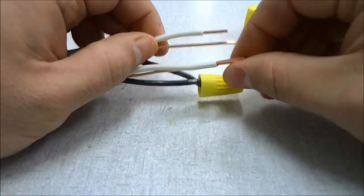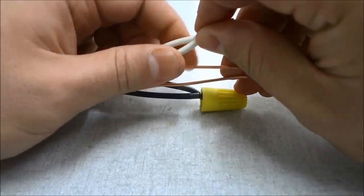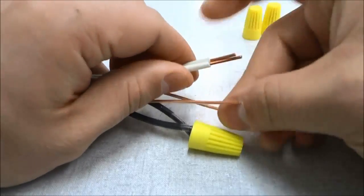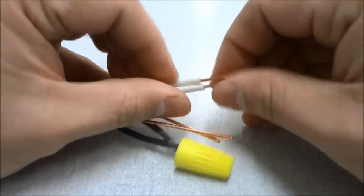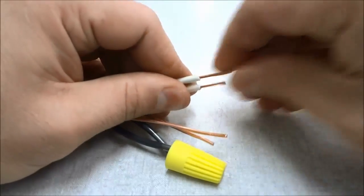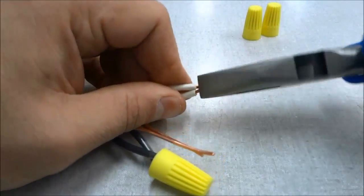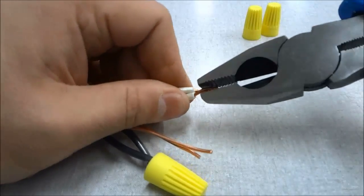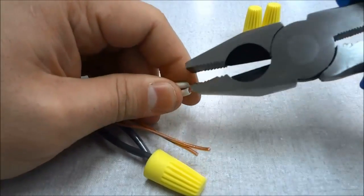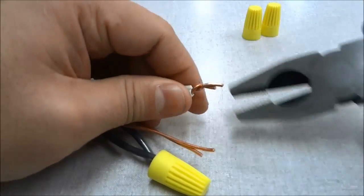Now we are going to take the two white wires and we are going to do the same thing. I'm pushing them together. Now I am going to get a pair of pliers and I am going to twist them together in a clockwise motion until they are fully connected and secured.